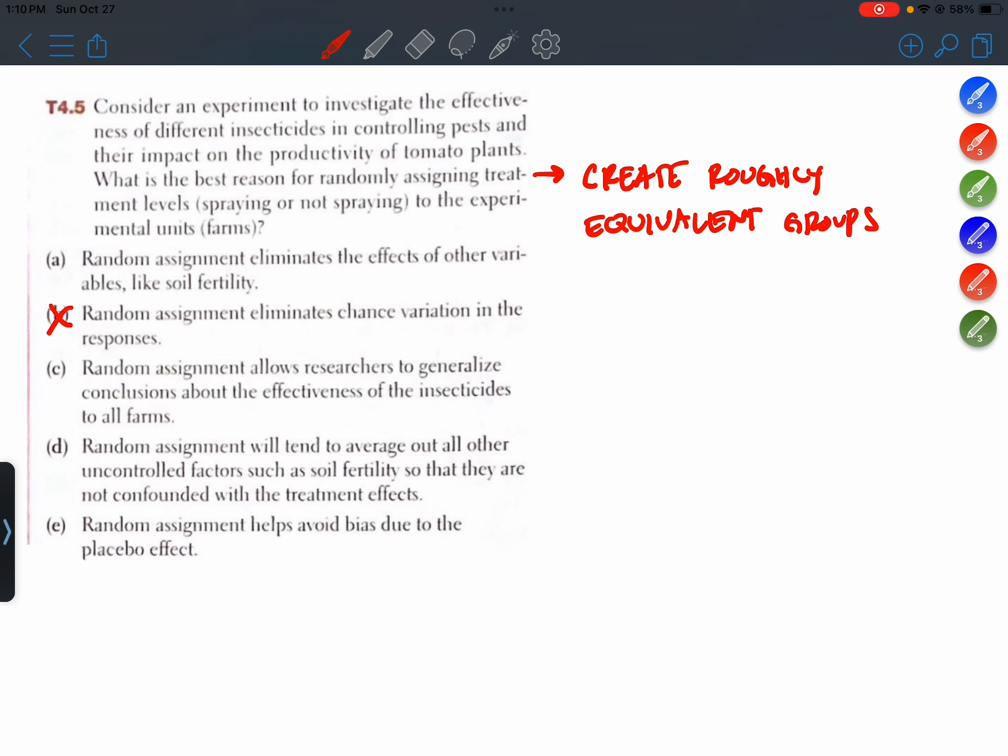Choice C: Random assignment allows researchers to generalize conclusions about the effectiveness of the insecticides to all farms. That one I know is false. Had it said random sampling, then it would be true. Random sampling allows us to generalize. Random assignment allows us to make cause and effect conclusions.